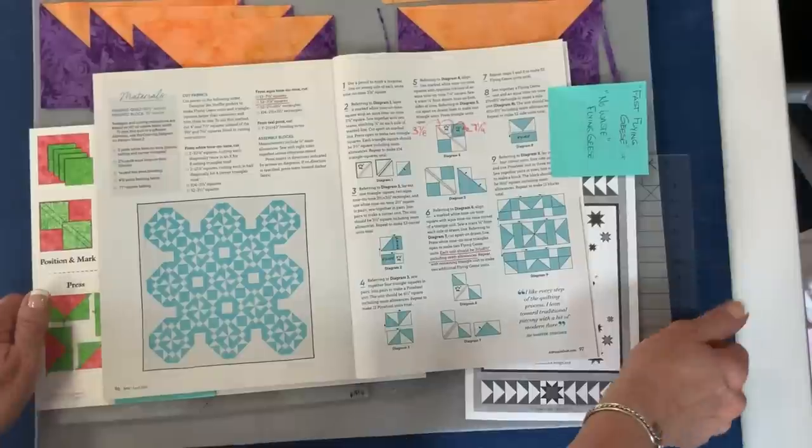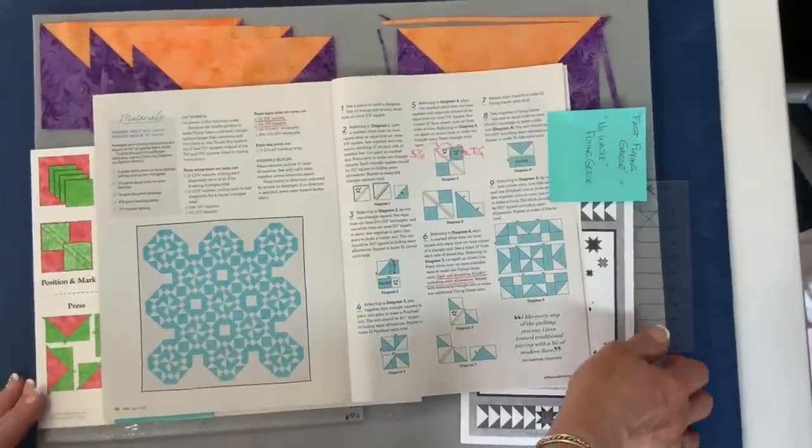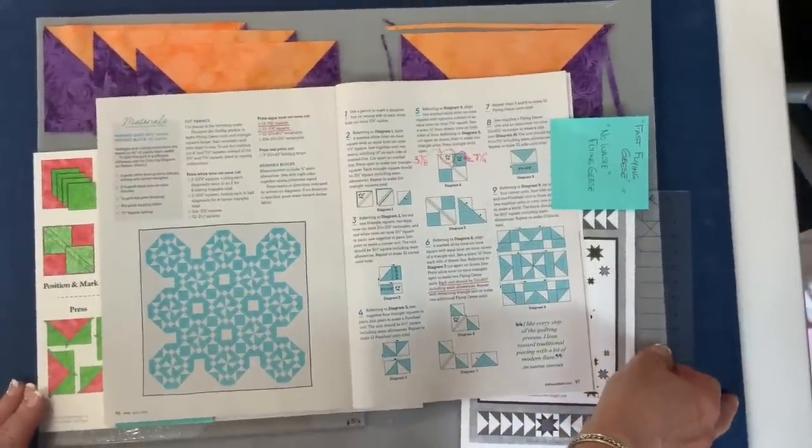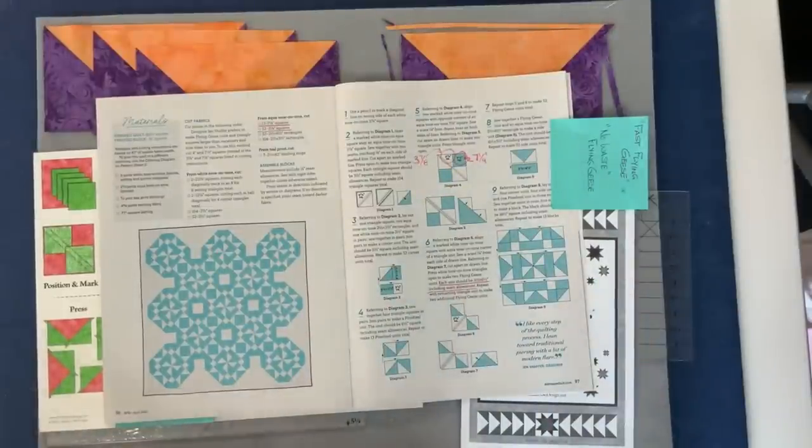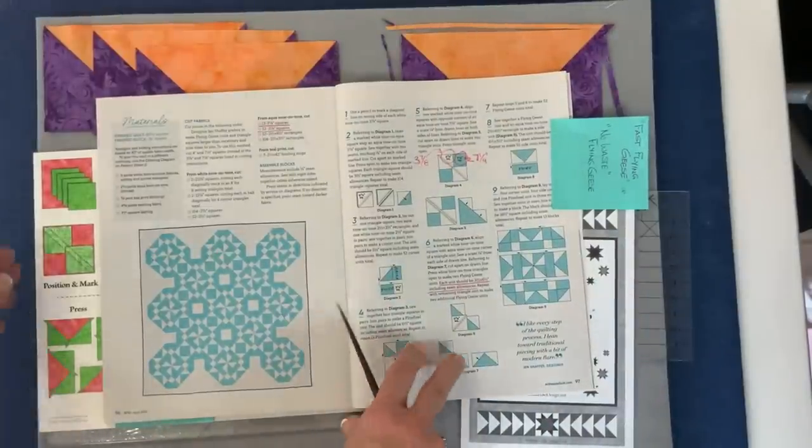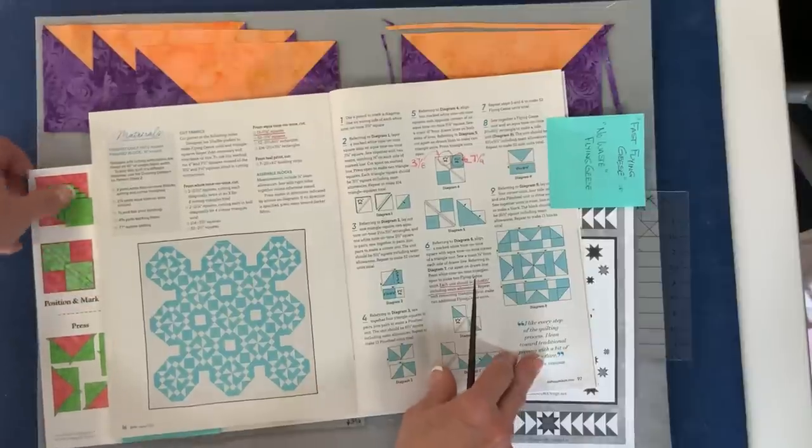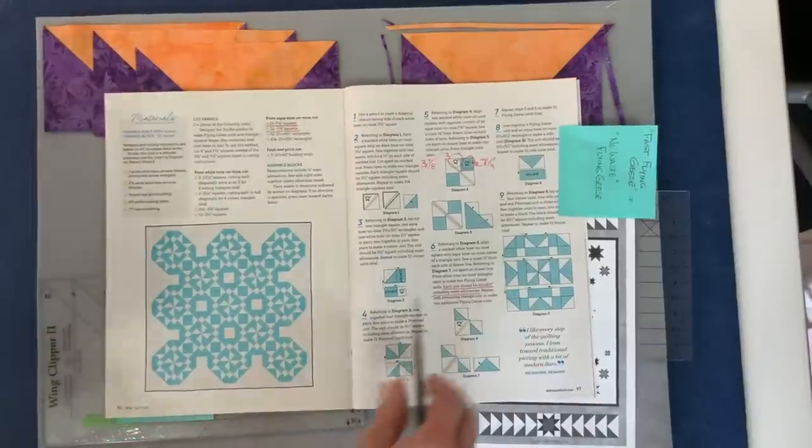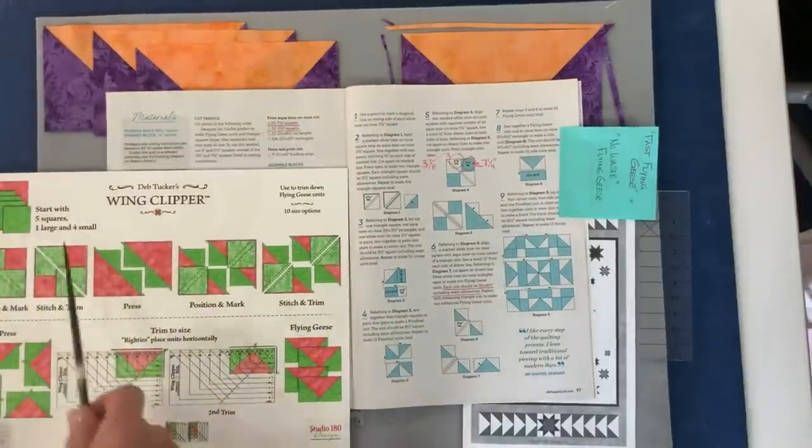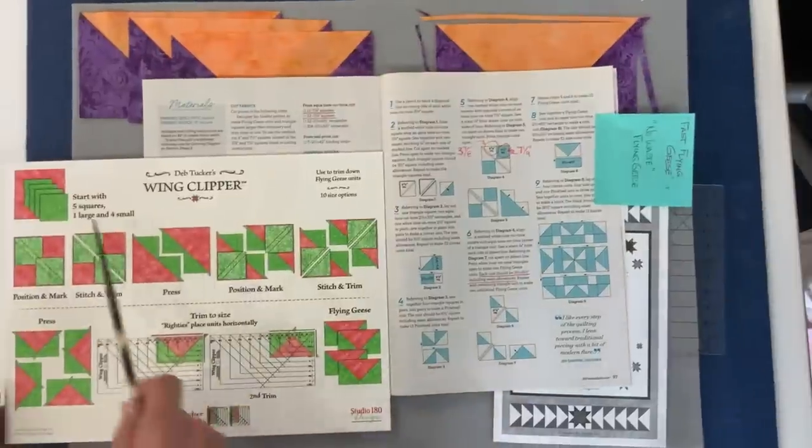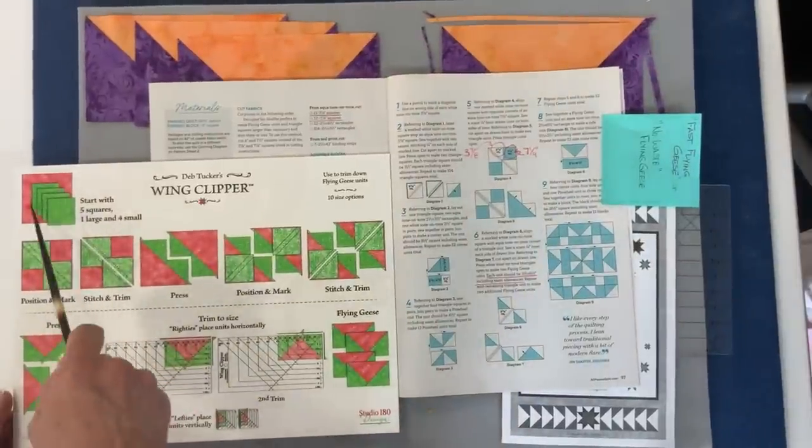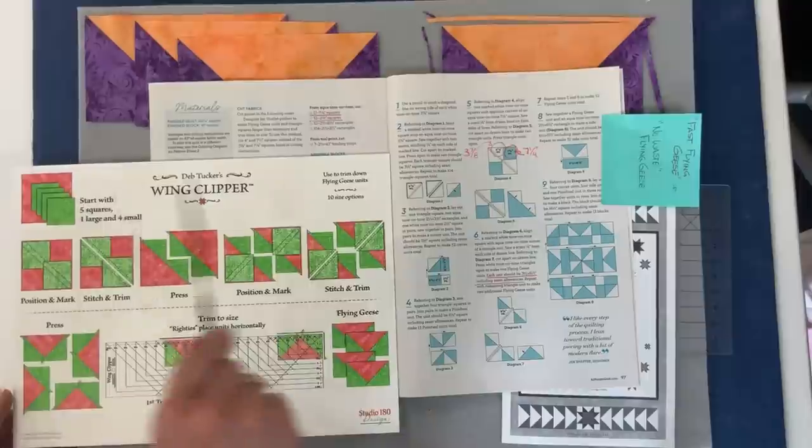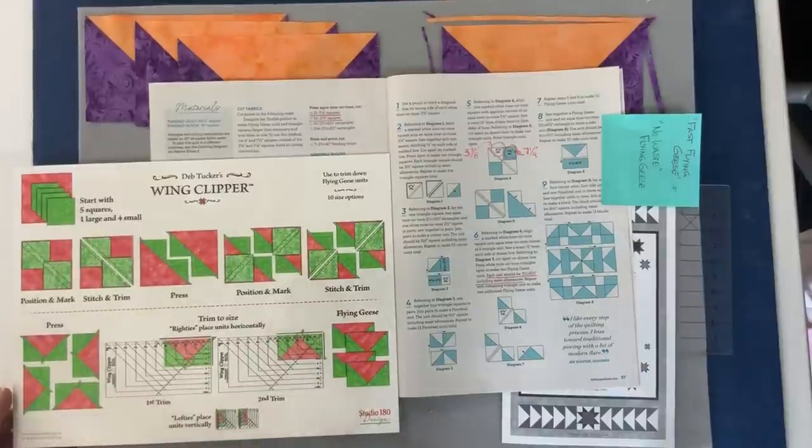But let's talk about the method. The method that I like to use for my construction with my flying geese is known by a couple different names. Some people call it fast flying geese. Some people call it the no waste method. It's becoming popular in magazines. I've been actually doing it for about 18 years, and it's a method where you start with five squares: four small squares and a large square, and go through a construction process that will end up giving you four finished flying geese.